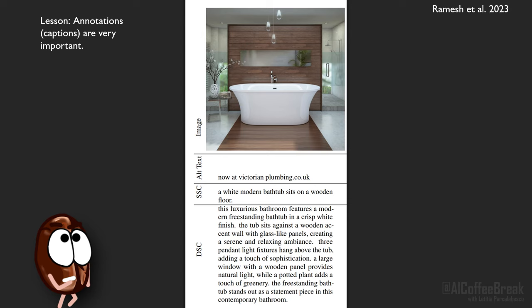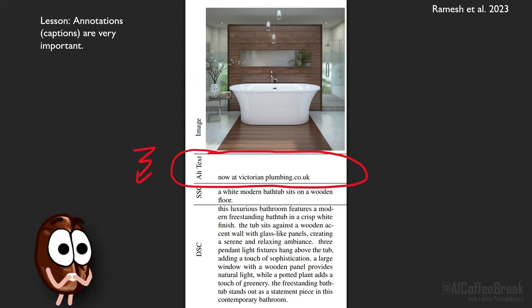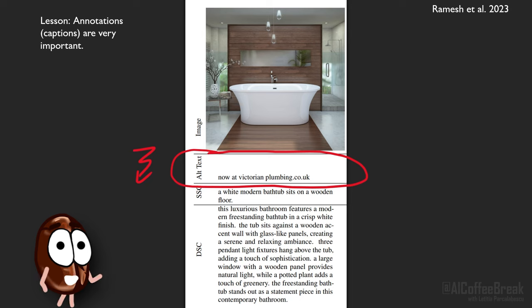The interesting training trick of DALL-E 3 that the authors describe is about its training data. What was the problem of DALL-E 2? It had troubles following prompts exactly — it misunderstood them or missed details. This is no wonder, because image caption datasets are scraped from the internet, containing images and their alt text as captions. Since people rarely write extensive and descriptive alt text for website pictures, these captions are short, talk mainly about the image subject, but miss out on details about the whole scene, surroundings, background, and all the tiny details.